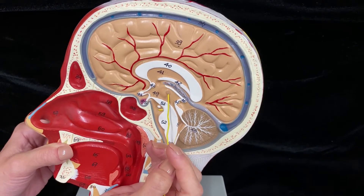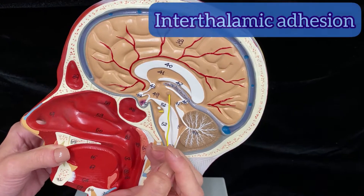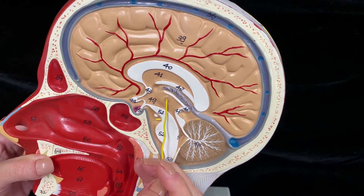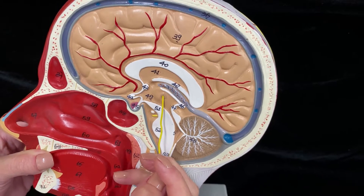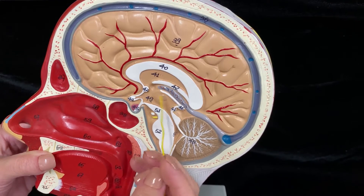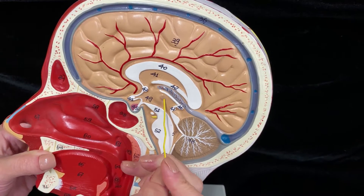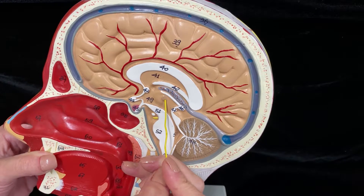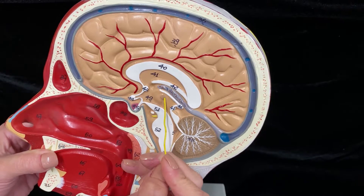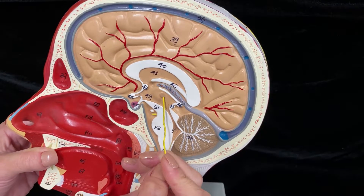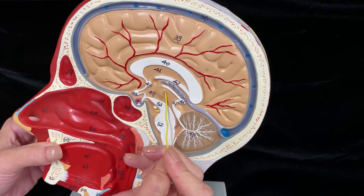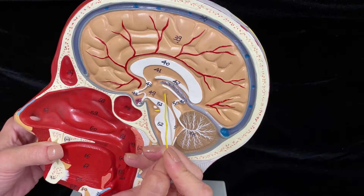Right here, you can see the interthalamic adhesion, which communicates the two thalami. The interthalamic adhesion — inter is between, thalamic refers to the thalamus, and adhesion is what adheres the two thalami.